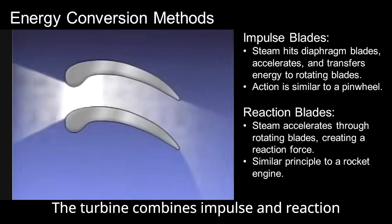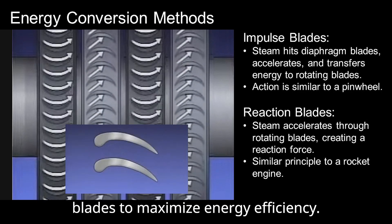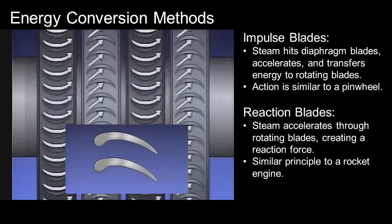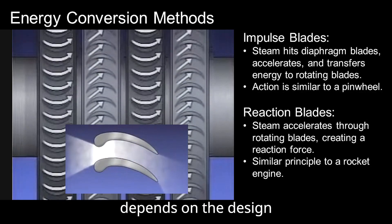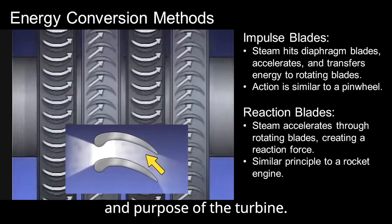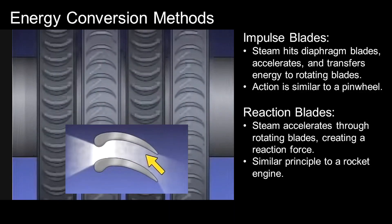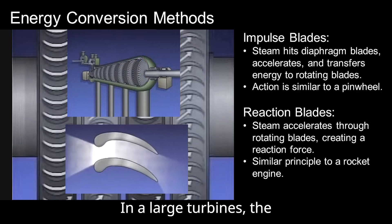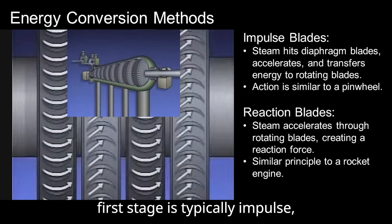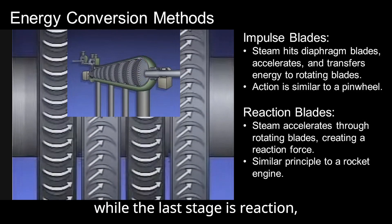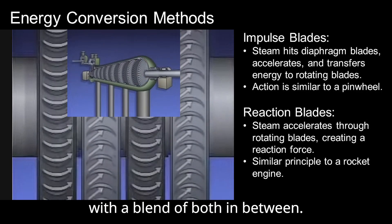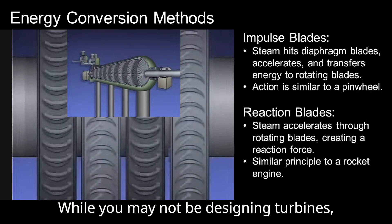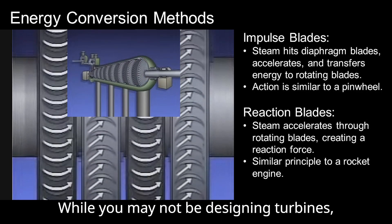The turbine combines impulse and reaction blades to maximize energy efficiency. The proportion of each type of blade depends on the design and purpose of the turbine. In a large turbine, the first stage is typically impulse, while the last stage is reaction, with a blend of both in between.